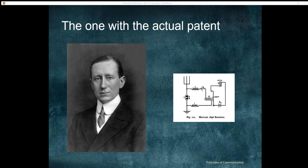He got into trouble with a fellow engineer named Masculine. Marconi was proudly displaying his wireless telegraph when Masculine decided to transmit higher energy signals that overshadowed Marconi's desired signals. All that was received over the wireless telegraph was one word: 'rats' — repeated over and over again. This is a simple example of jamming and hacking, and I have added a link to a video that talks about this in greater detail.